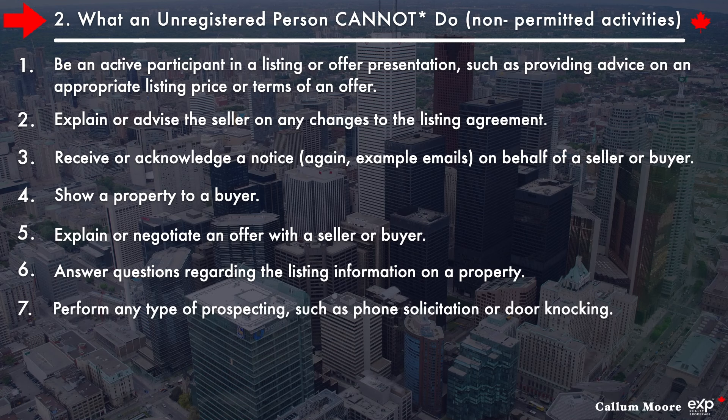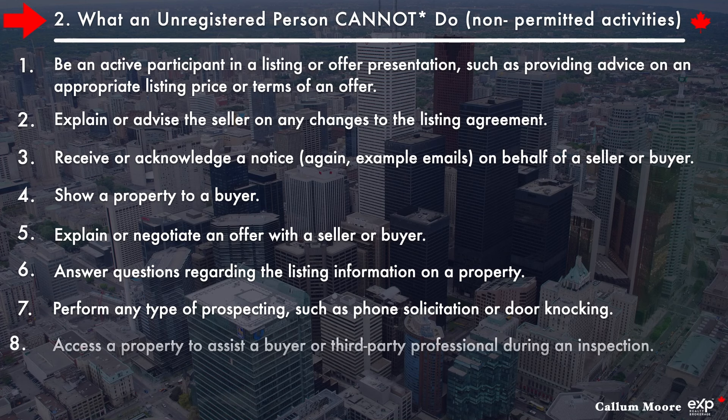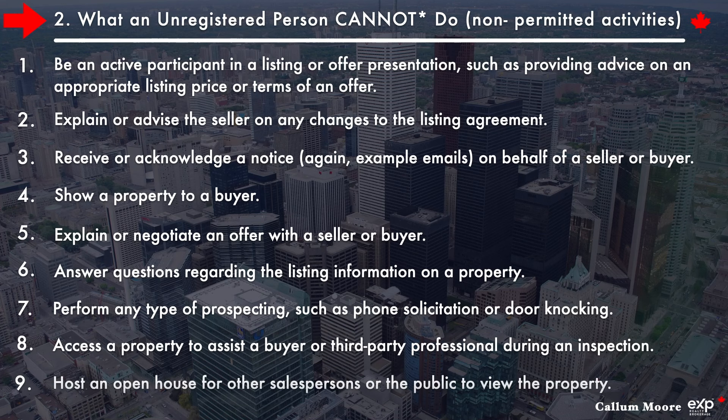Six, answer questions regarding the listing information on a property. Seven, perform any type of prospecting, such as phone solicitation or door knocking. You can call people, but you have to be calling people on behalf of other salespersons — we'll go deeper on this one later. Eight, access a property to assist a buyer or third-party professional during an inspection. And nine, host an open house for other salespersons or the public to view the property — you can't host an open house by yourself, you'll have to have the salesperson or broker with you. Good common sense stuff that will come up in the exams.